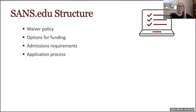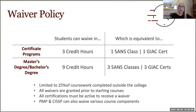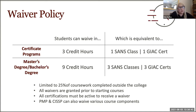There are a few academic elements to the sans.edu structure that differ from SANS as you may know it. A very popular question we get is: I've taken SANS classes before — can they apply to the program? Because we are an accredited college, there's a 25% waiver limit to the number of outside courses — meaning sans.org courses — that can count toward a degree or program. For a certificate program, that 25% equals three credits, or one SANS class with the associated GIAC certification. For the master's program, that's nine credits, or three SANS classes and their associated GIAC certs. All GIAC certifications must be current and in good standing.